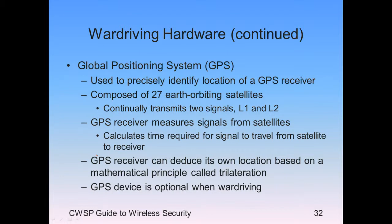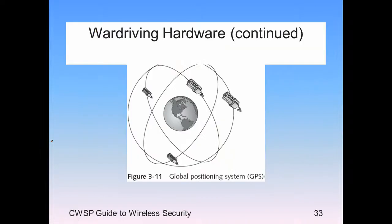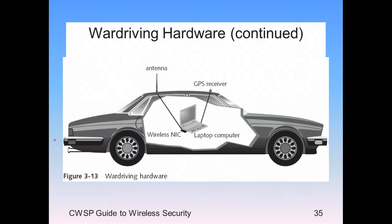GPS uses Earth-orbiting satellites continually transmitting signals. For war driving, if you want to make an accurate map, you need GPS to put the access points on the map. The repeatable nature means you can go back to verify they're still there and still open. War driving hardware includes a small antenna on the roof, a GPS receiver, and a wireless NIC — the GPS and wireless feed into the laptop, which combines them into a map showing wireless access points and their locations.